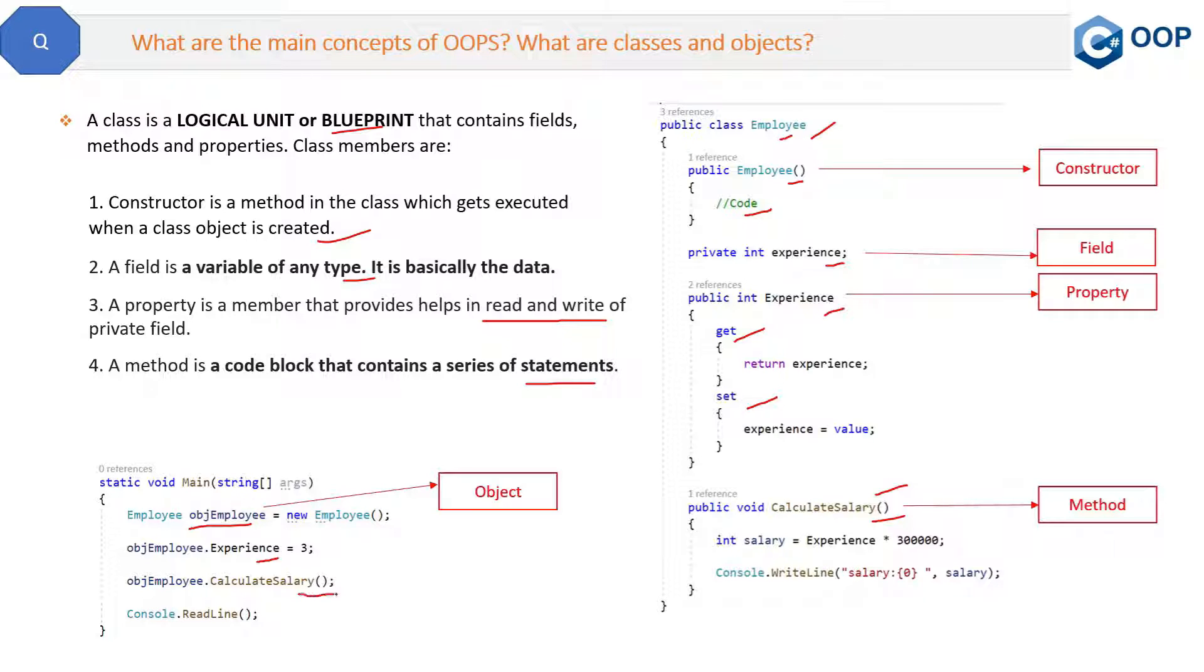Then we are setting the property experience via the object, and then we are calling the calculateSalary method via the object only. So what is an object? An object is an instance of a class. So if you want to use a class in your application, then you have to create its object.